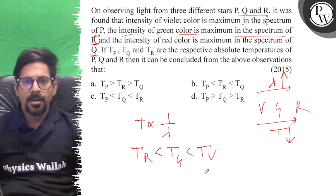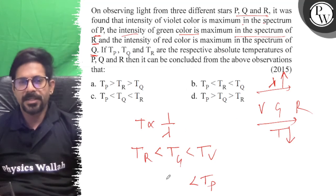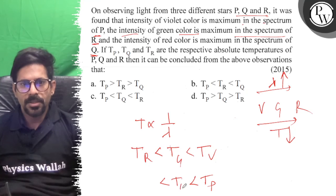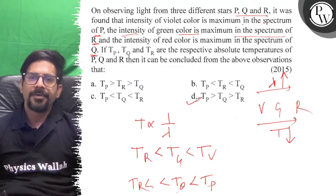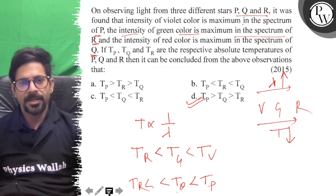Temperature of violet was P spectrum, this is Q, and this is R. So T_R is less than T_Q is less than T_P. The option is correct. All the best.